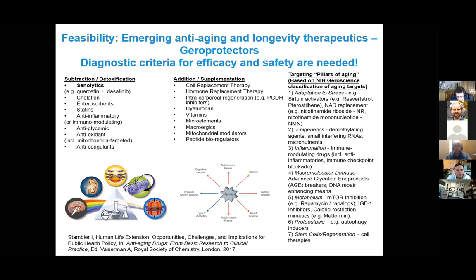We also know that there are multiple proofs of principle that it is indeed possible to intervene into aging, to postpone age-related disease, and to extend healthy lifespan — from animal models as well as from some emerging human trials. There is a multitude of approaches and classifications of aging processes that are targeted. What do we mean by biomarkers of aging? What do we select? Obviously everything changes with age. Do we use seven processes, or some other seven or 77 processes? Do we use this proprietary algorithm or another? It's very open.